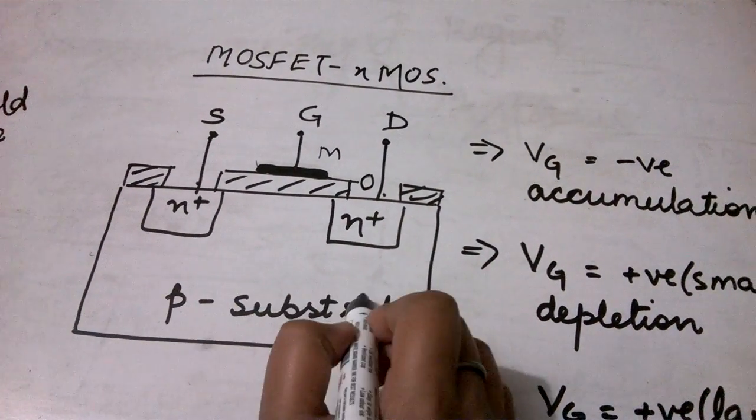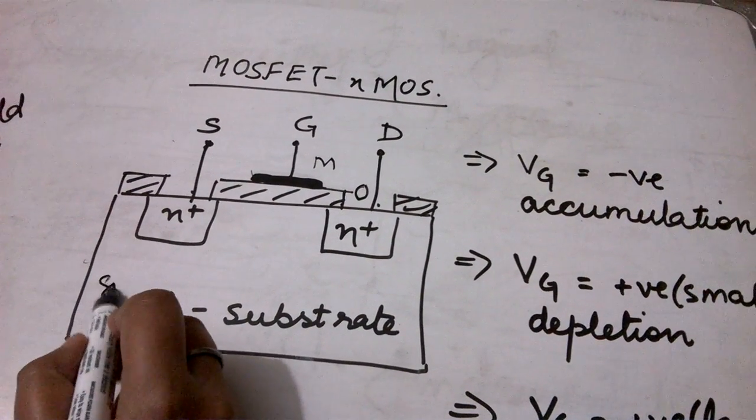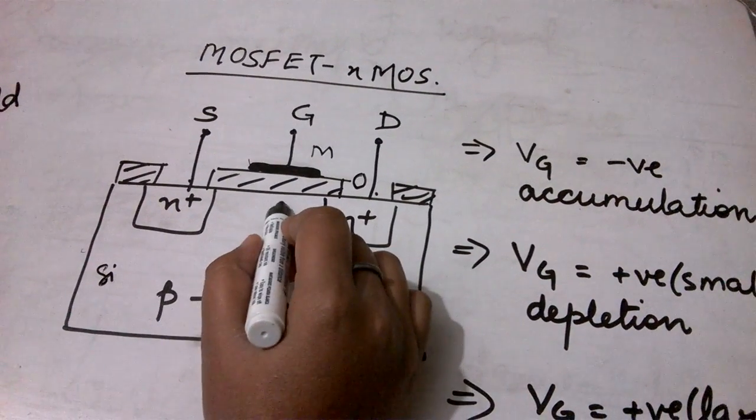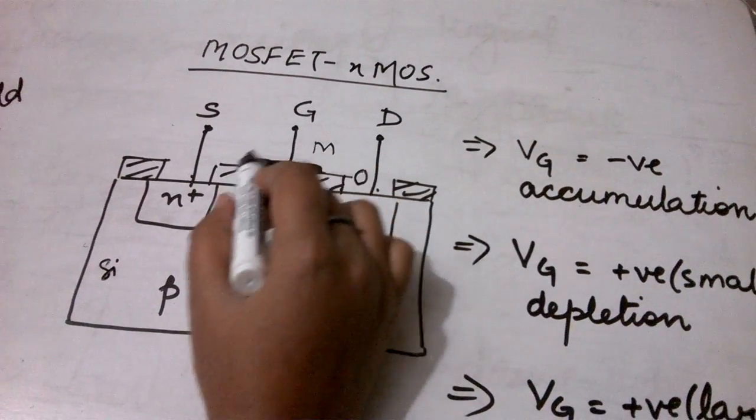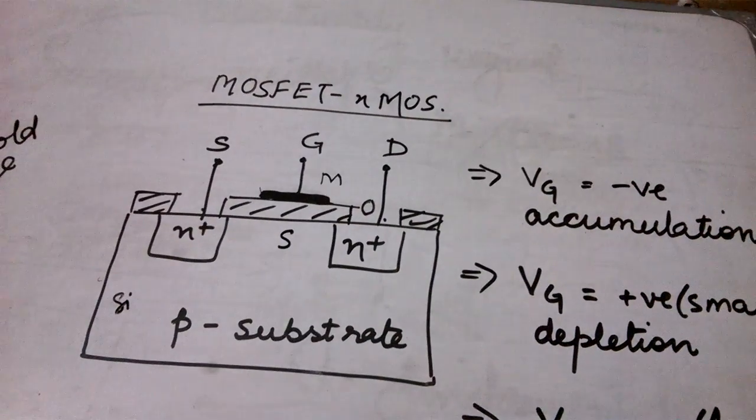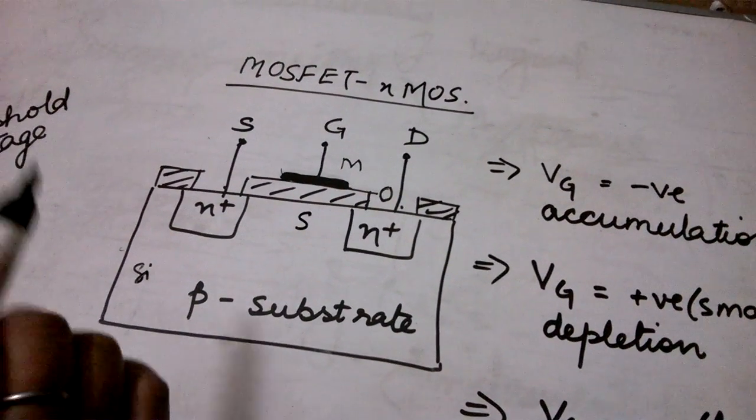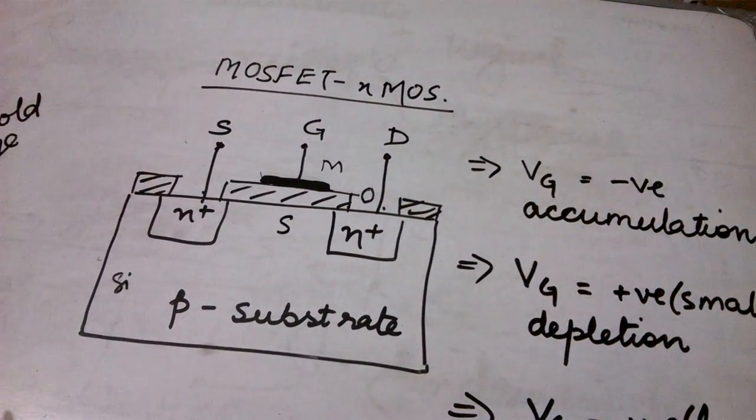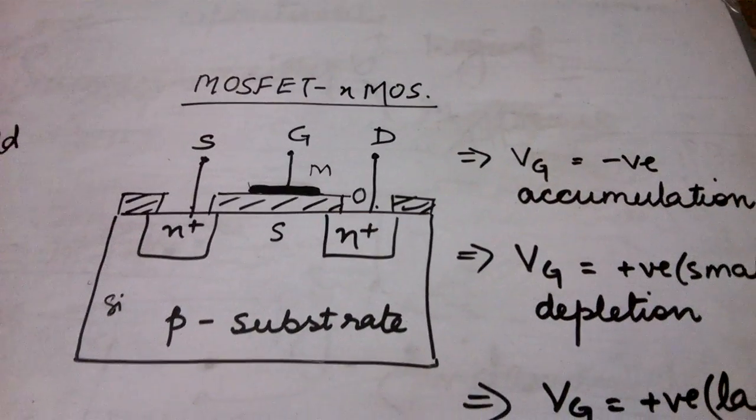And this part is your P-type substrate which is basically silicon. So this is your semiconductor material. So this particular part forms the MOS structure in any MOSFET. So metal oxide semiconductor, the significance of the name is clear from here.